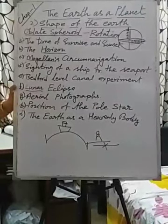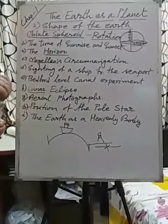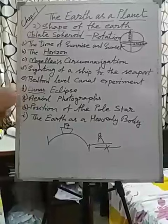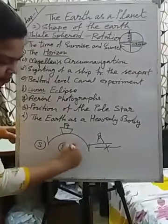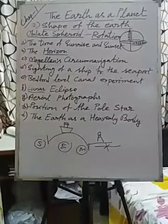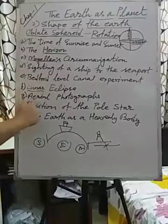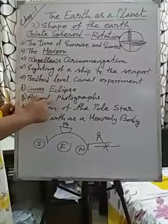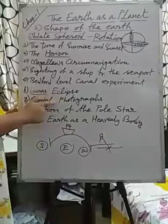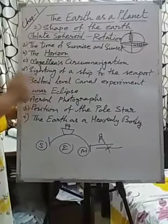Lunar eclipse: when the Sun, Earth, and Moon come in a straight line, with the Earth in the middle between the Sun and the Moon, we can see the shadow of the Earth on the Moon. This proves the shape of the Earth is spherical — oblate spheroid. Aerial photographs is a very modern technique: with the help of satellites, we can now take photos of the Earth from space, and those photos have already proved that the shape of the Earth is oblate spheroid.